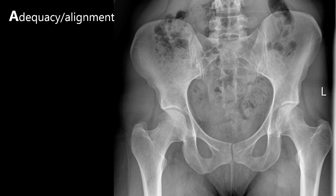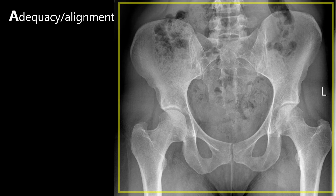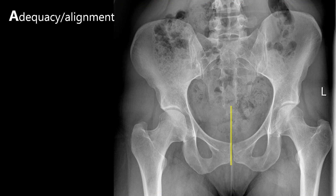First is adequacy and alignment, which is a quick assessment of the image quality. An adequate image means that we can see the entire pelvis, from the top of the iliac crests down to the femoral shafts. An aligned image means that we have the coccyx and pubic symphysis in the midline.